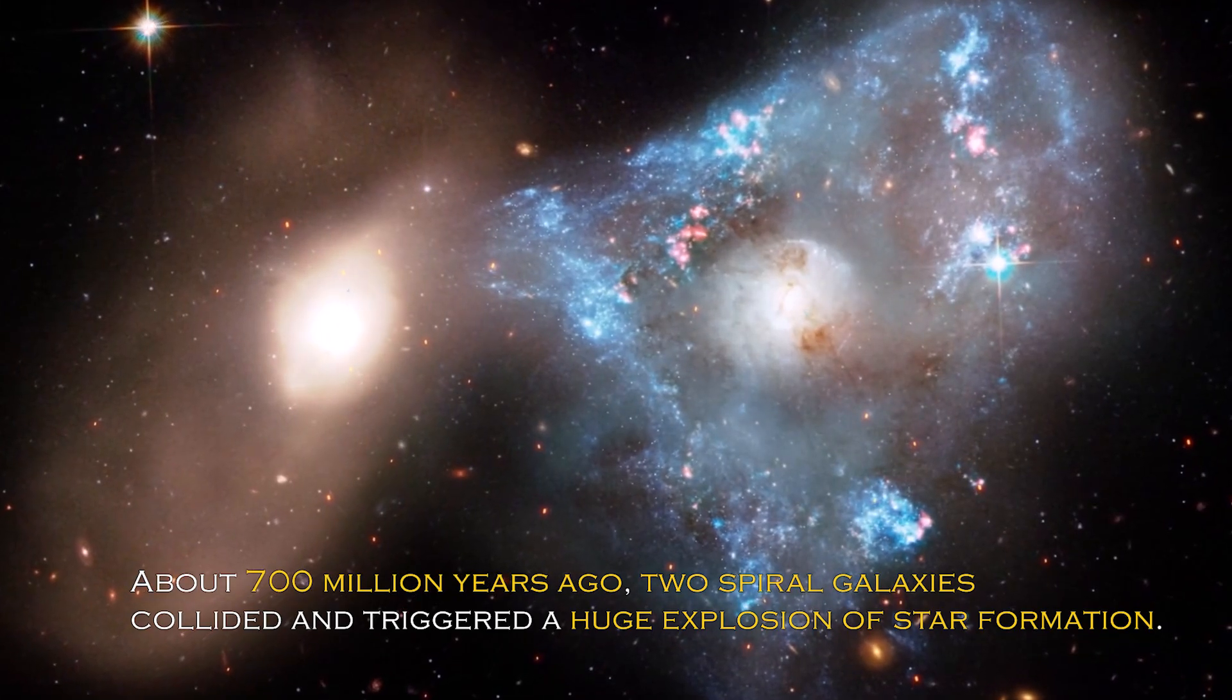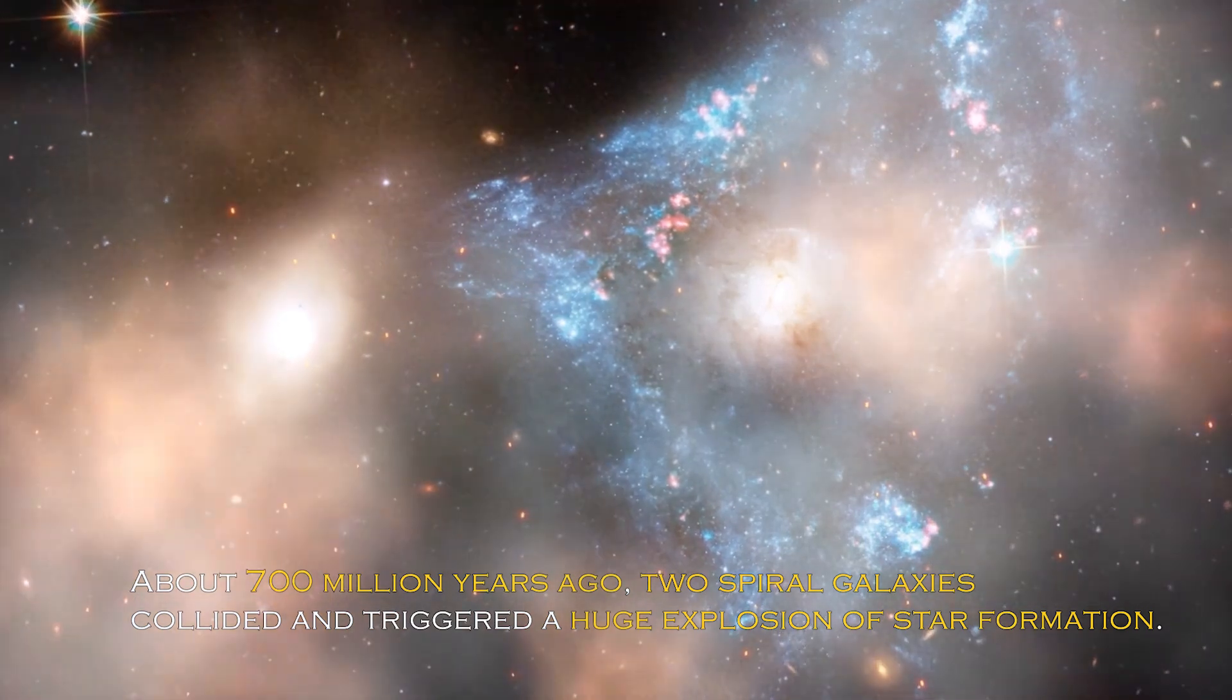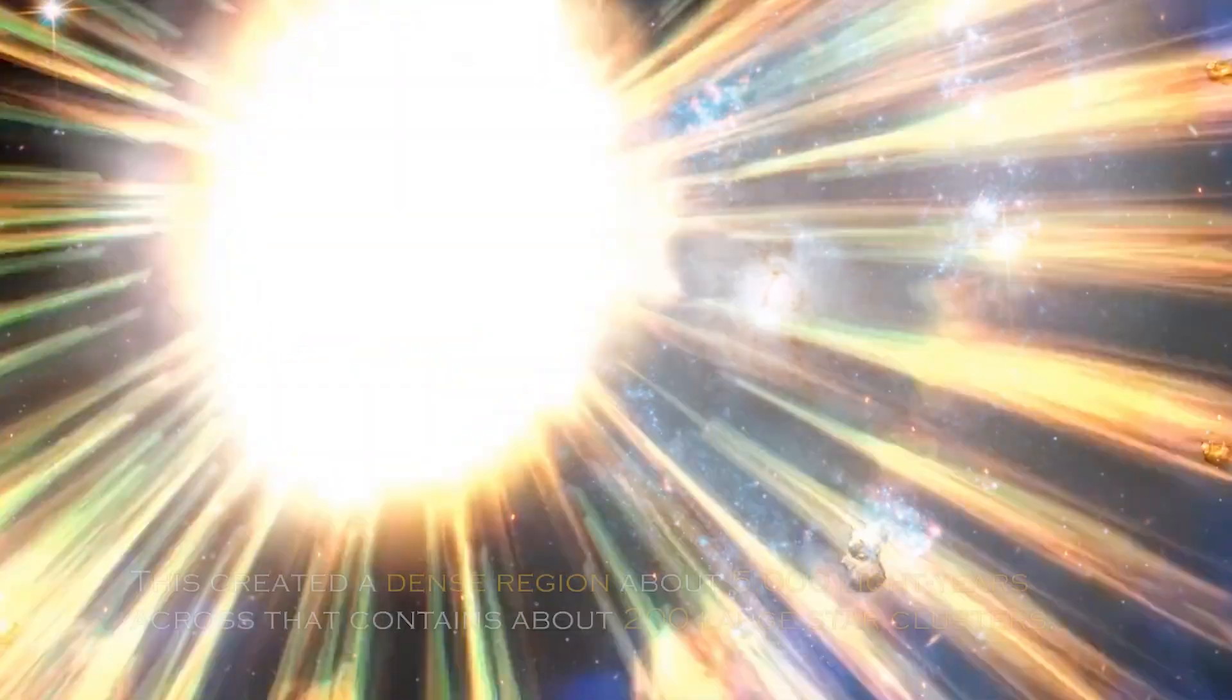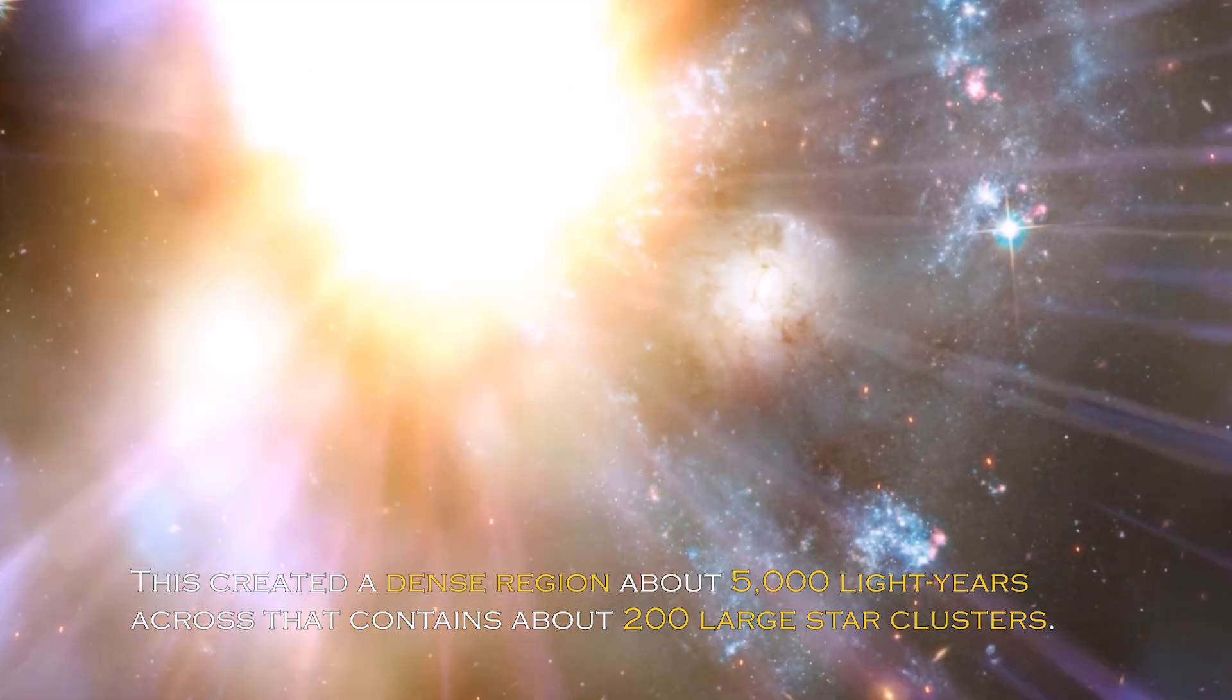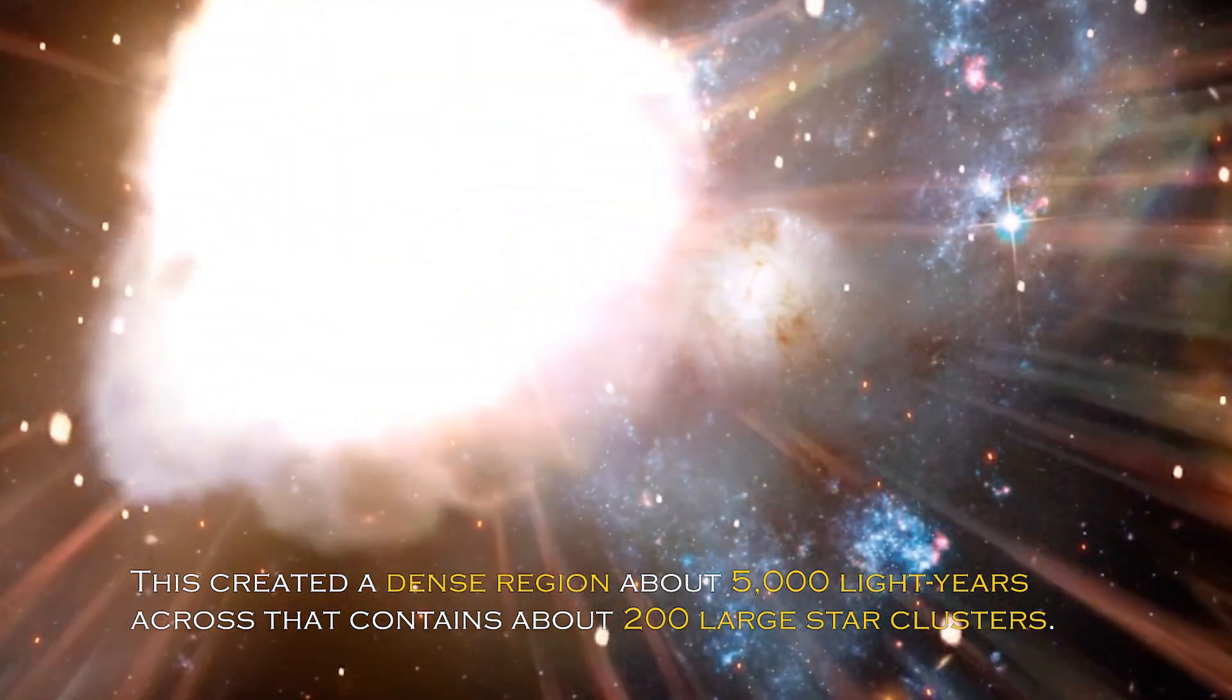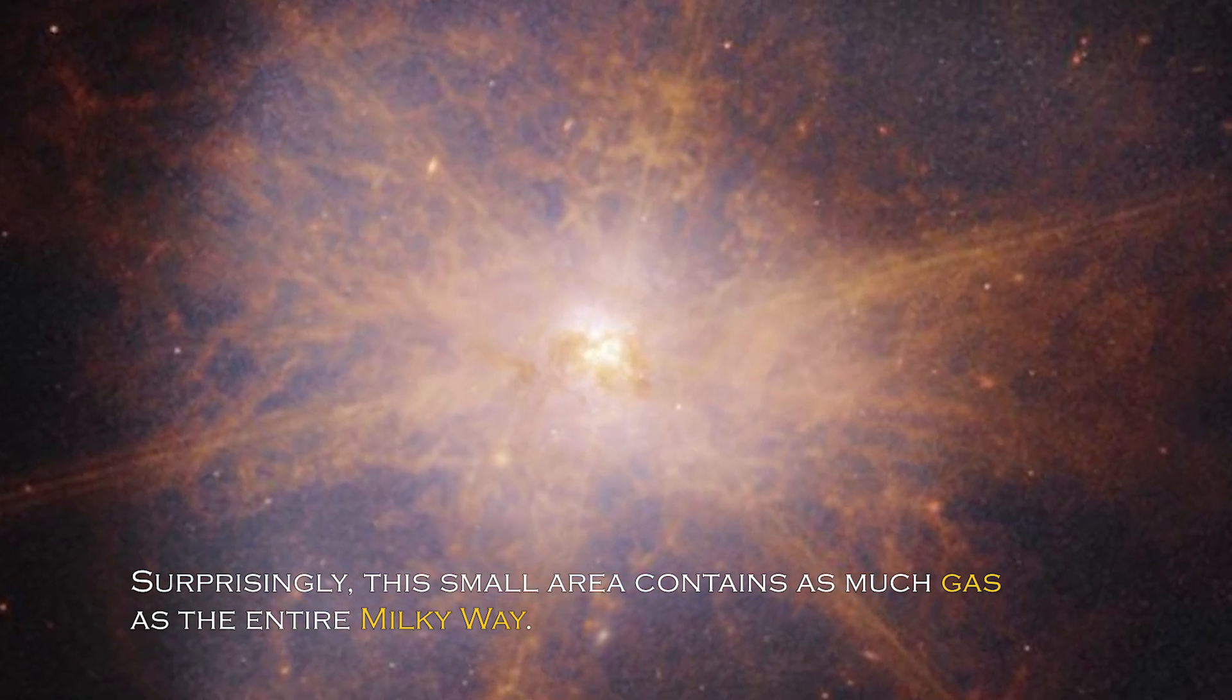About 700 million years ago, two spiral galaxies collided and triggered a huge explosion of star formation. This created a dense region about 5,000 light-years across that contains about 200 large star clusters. Surprisingly, this small area contains as much gas as the entire Milky Way.